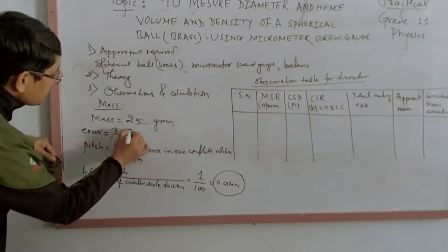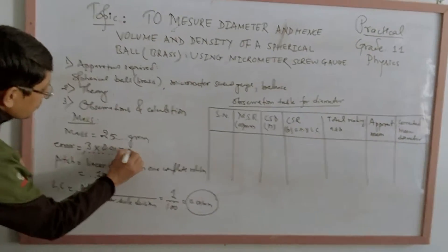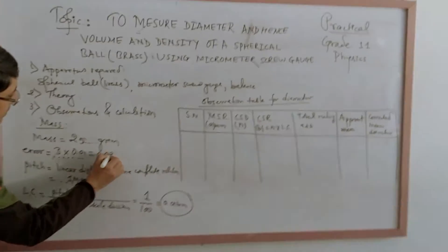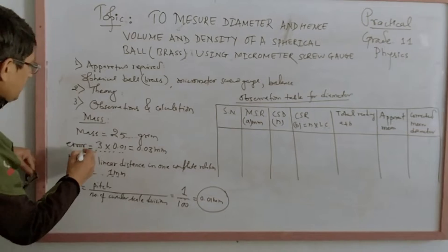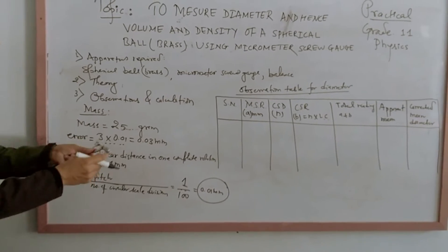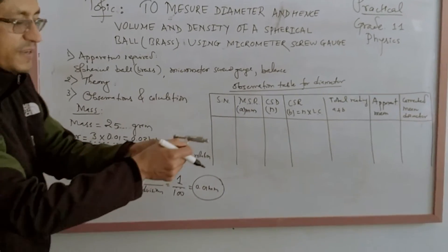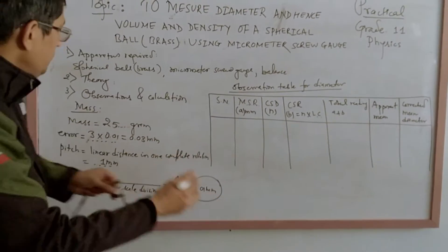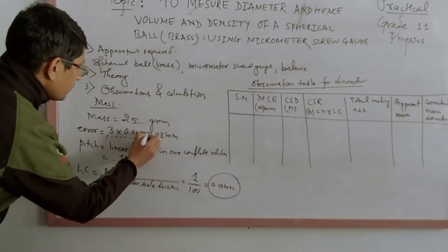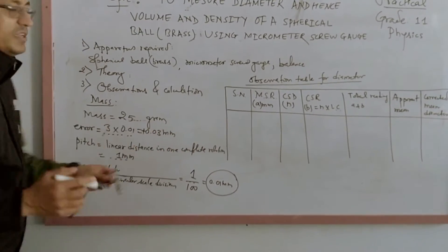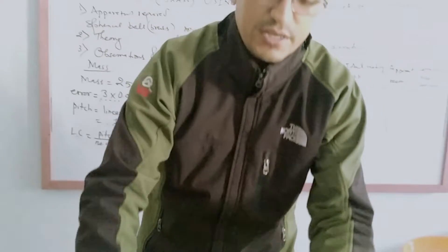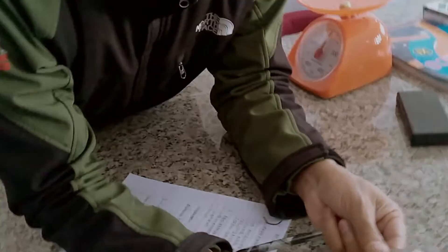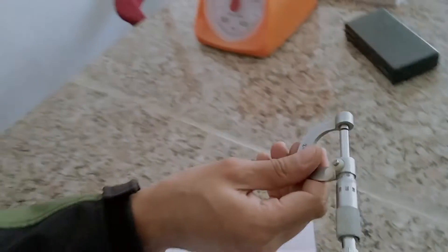3 times 0.01 means 0.03 mm is the zero error. The reference line shows a positive zero error of 0.03 mm.